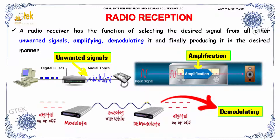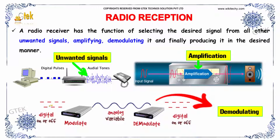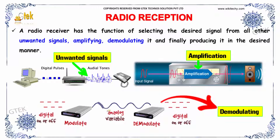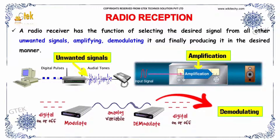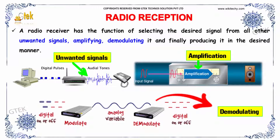You are able to see the digital data on or off — modulated as analog variable, it is demodulated, and you get the digital on/off signals back. So this is modulating and this is demodulating.